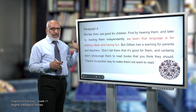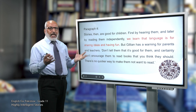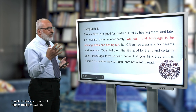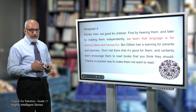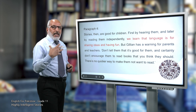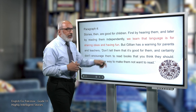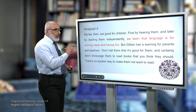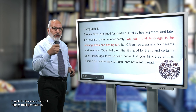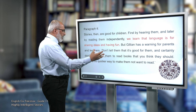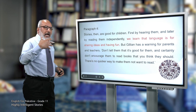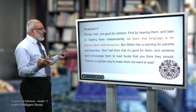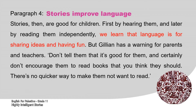Based on paragraph three, we know children like stories. Stories are good for children — first by hearing them, then by reading them independently — because they develop children's language. But Jillian has a warning for parents and teachers: she asks them not to encourage their children to read books or stories that parents consider important, because this has a negative effect — it makes children not like reading stories. The main idea of this paragraph is that stories improve language, but children should choose freely.